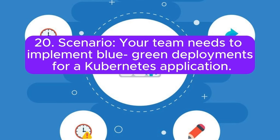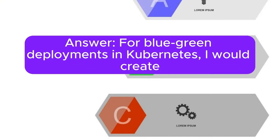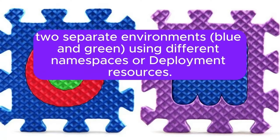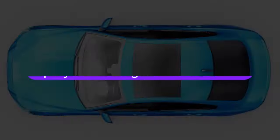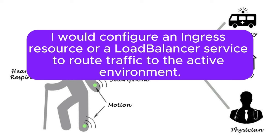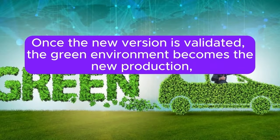Scenario 20: Your team needs to implement blue-green deployments for a Kubernetes application. How would you configure Kubernetes to support this deployment strategy? Answer: For blue-green deployments in Kubernetes, I would create two separate environments — blue and green — using different namespaces or deployment resources. The current production version would run in the blue environment while the new version is deployed to the green environment. I would configure an ingress resource or load balancer service to route traffic to the active environment. Traffic would be gradually shifted from blue to green using DNS updates or by modifying ingress rules. Once the new version is validated, the green environment becomes the new production.